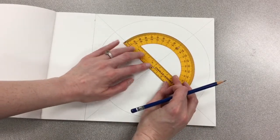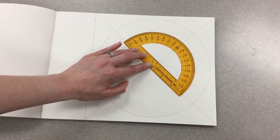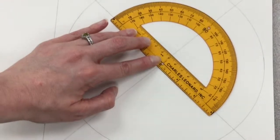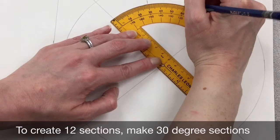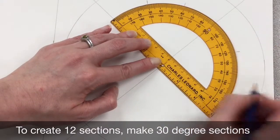This is a protractor, and I'm going to take the protractor to divide my circle into even sections. In this case, 12 sections. So to create 12 even sections, I'm going to make a mark every 30 degrees.